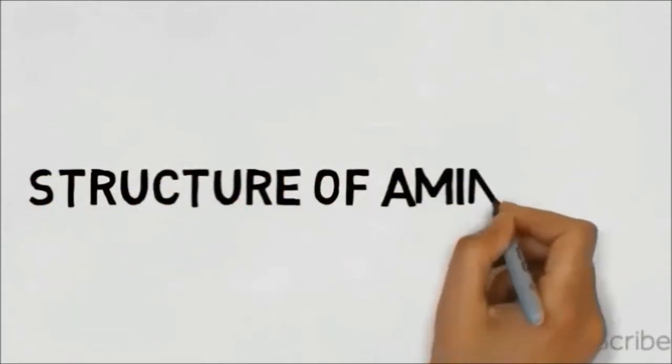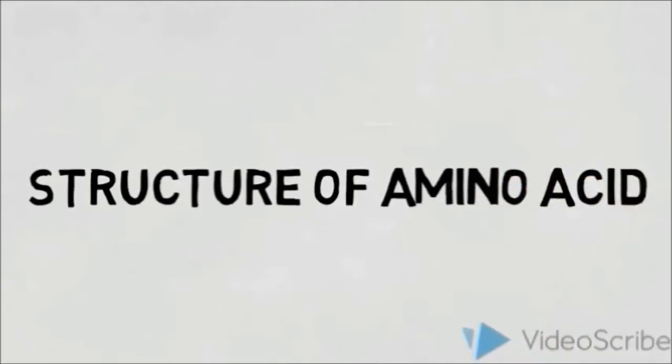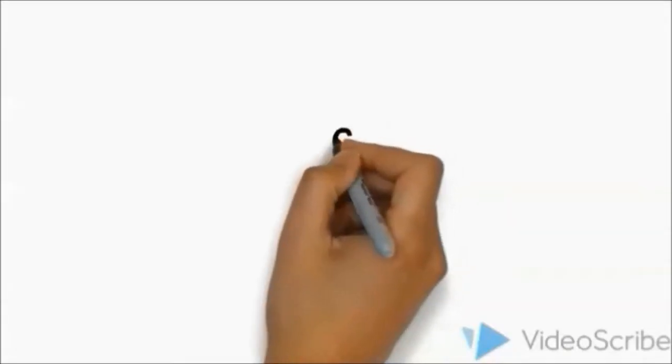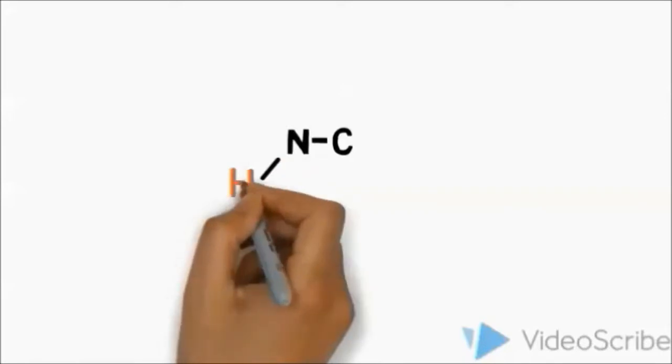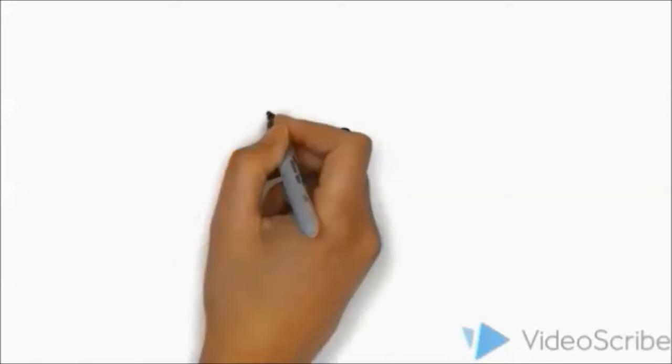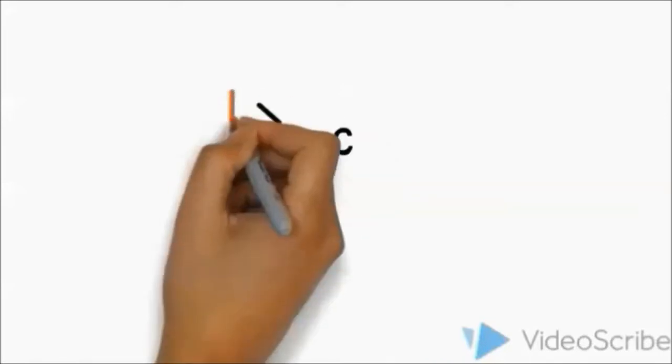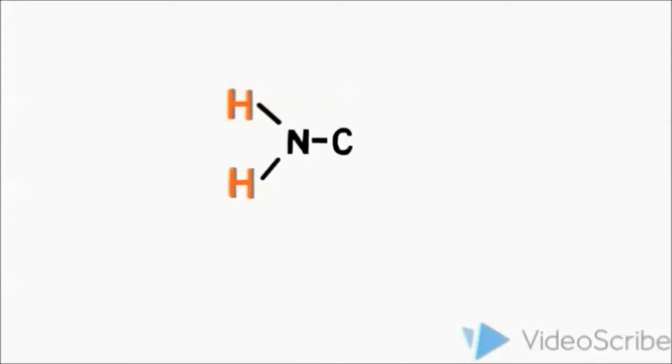Structure of amino acid. Amino acid has two functional groups. The first functional group is amino group and second functional group is carboxyl group.